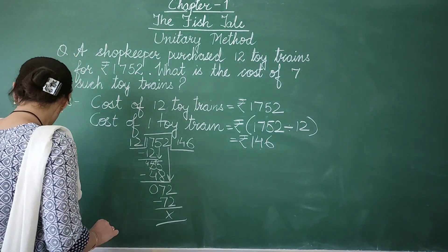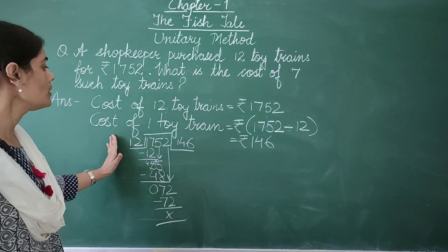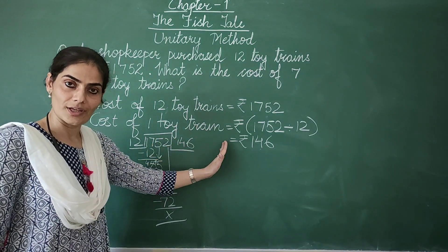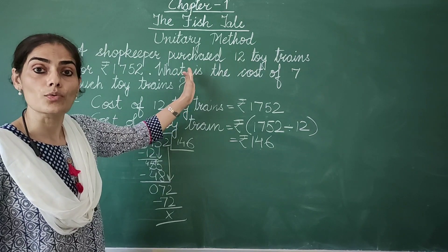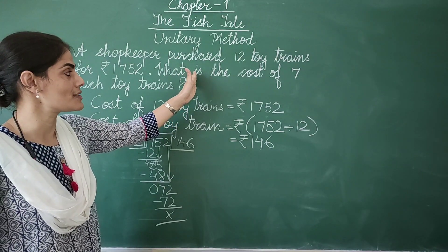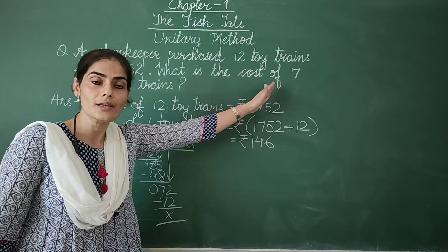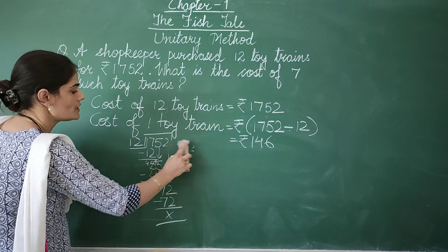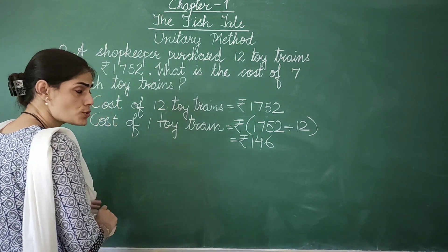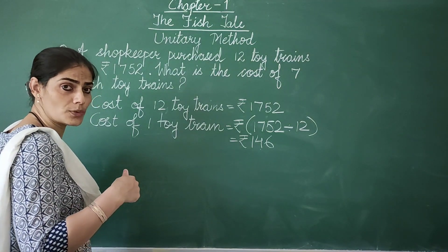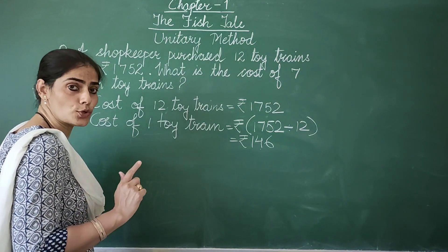Now what are we supposed to find after this? Now we know the cost of 1 toy train. We need to find the cost of required number of toy trains. And the required number is 7. So let me rub this working. But when you show the working in your answer, don't erase it. I am erasing because I am not left with space.